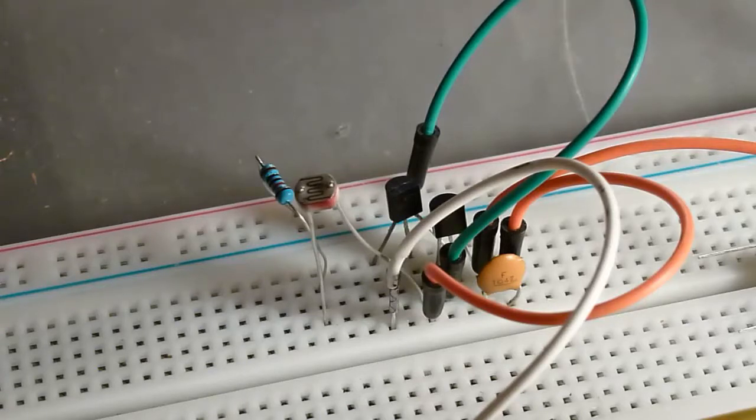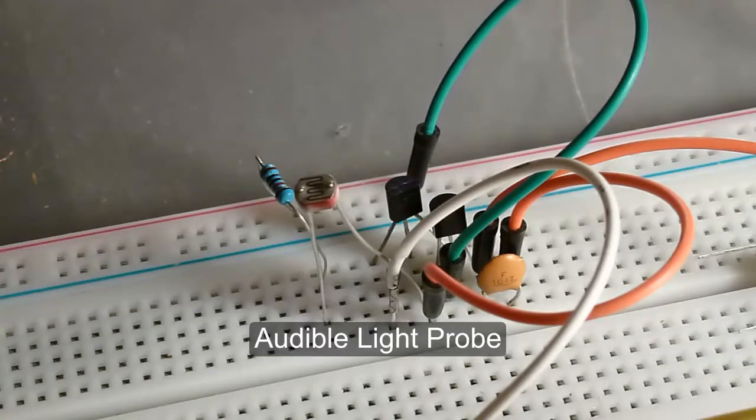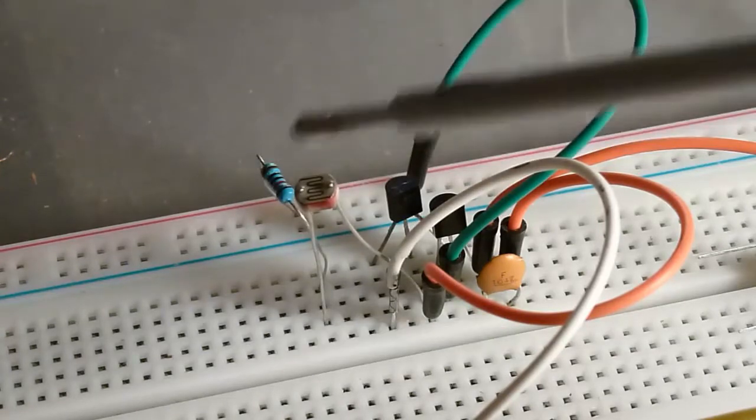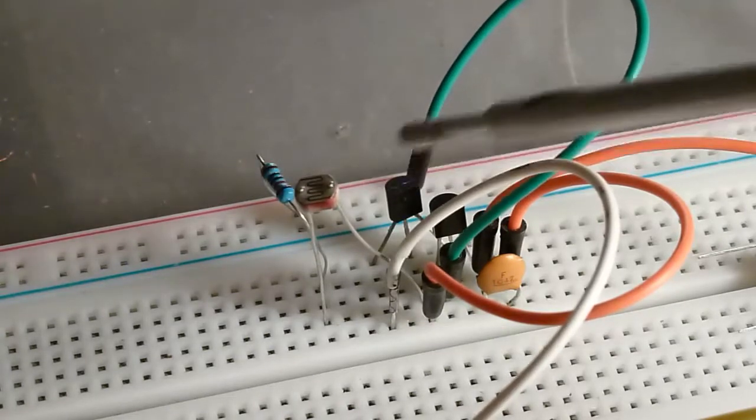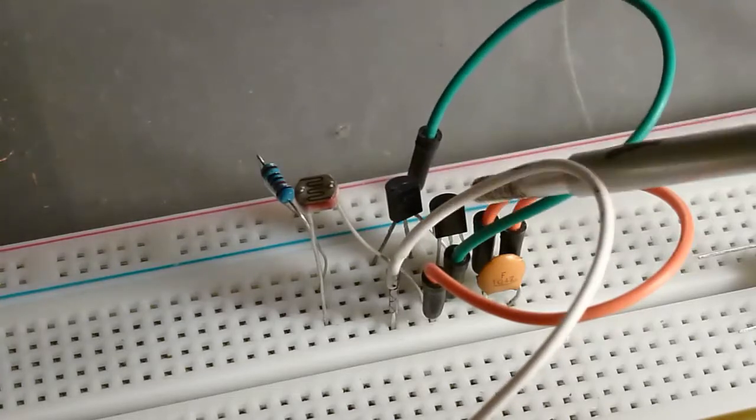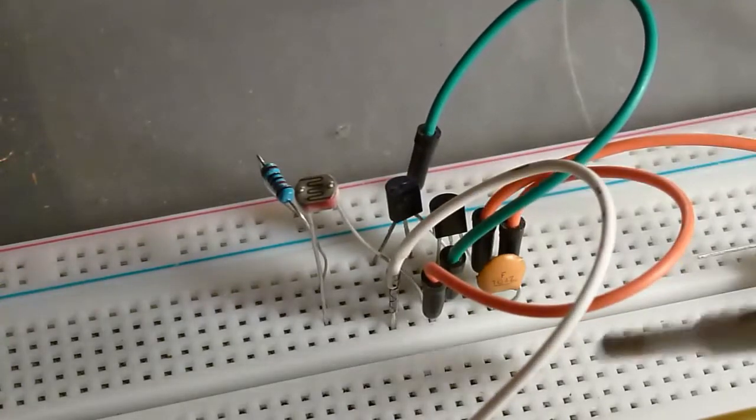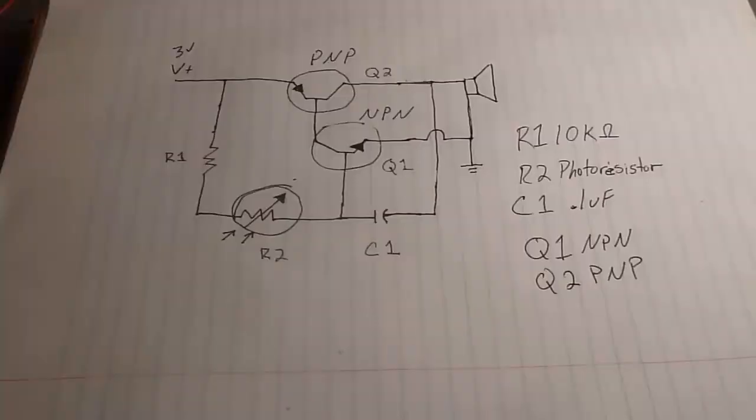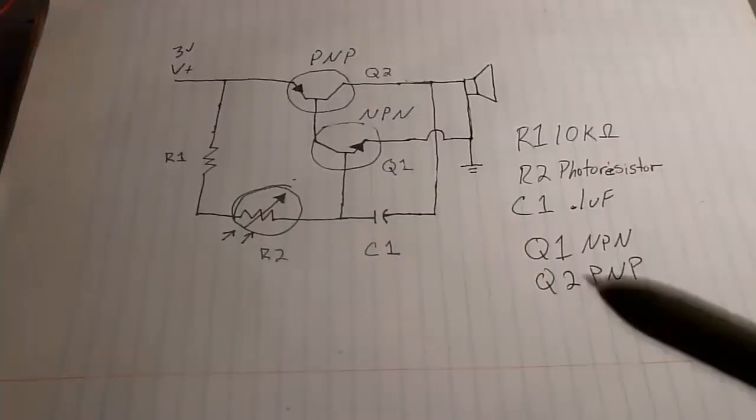It's a real simple circuit. You have a resistor here, a photoresistor, NPN transistor, a PNP transistor, and then you got a capacitor here, and then a power source and a speaker. That's it. Let's look at the schematic.